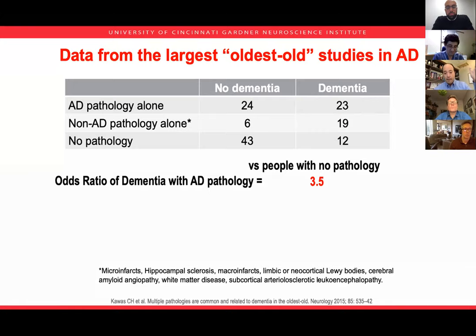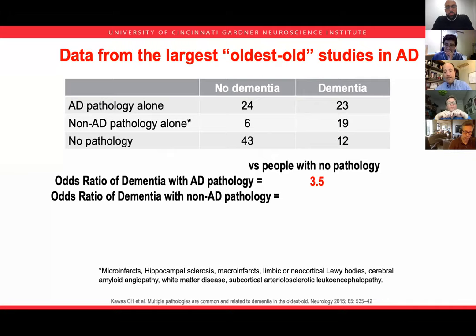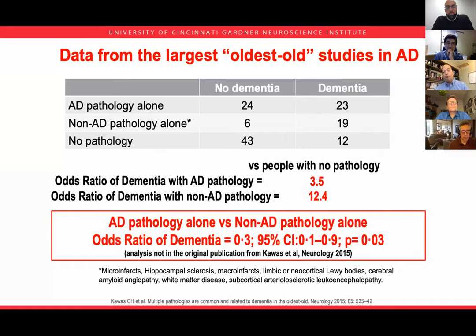This data allows us to calculate the odds ratio of dementia with pathology: that is 3.5, consistent with a three-to-four-fold risk of dementia given pathology. But this very data also allows us to ask the odds ratio of dementia with non-AD pathology — everything that isn't part of what we define as Alzheimer's pathology — and that is 12.4. When you calculate the odds ratio of dementia given AD pathology compared to non-pathology, that is 0.3, with a confidence interval still in the protective range.